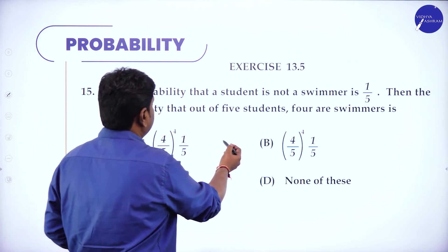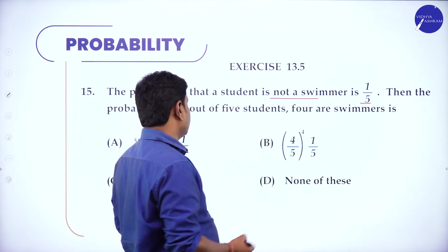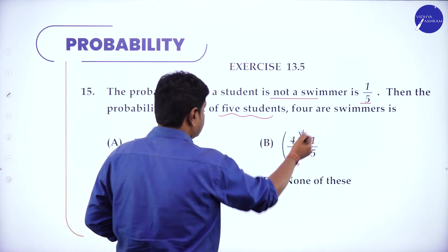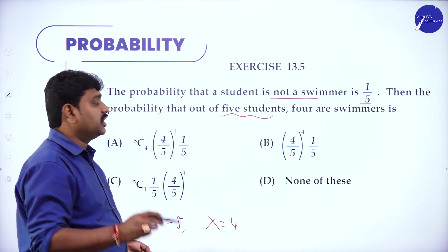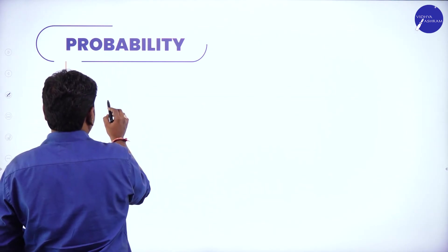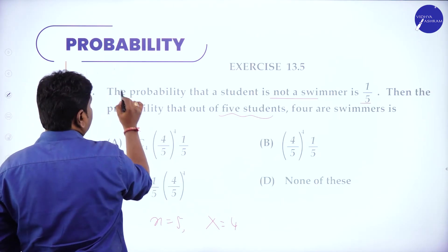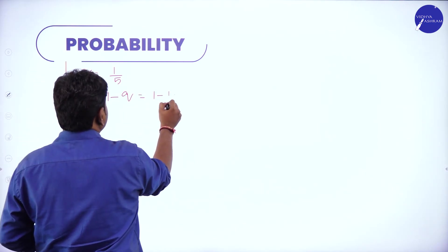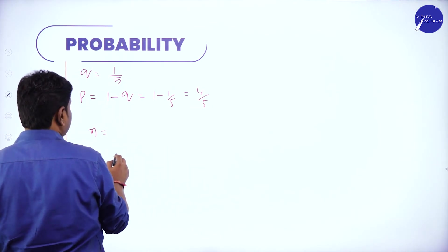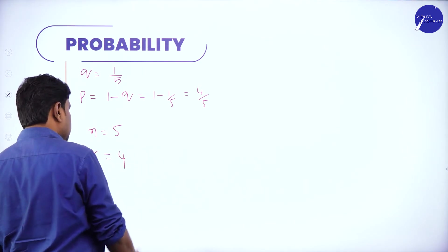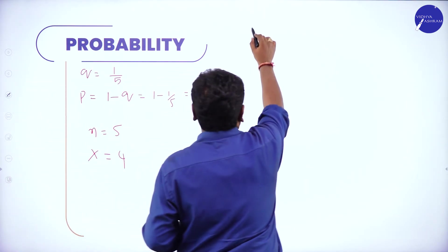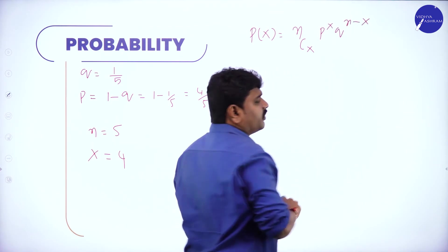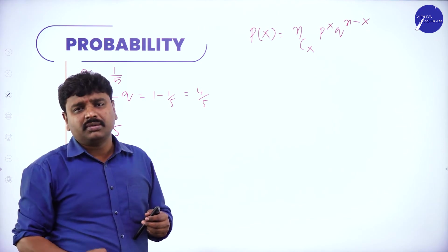Next problem: the probability that a student is not a swimmer is 1/5. Find the probability that out of 5 students, exactly 4 are swimmers. So n = 5, and since q (not a swimmer) = 1/5, then p (swimmer) = 1 − 1/5 = 4/5. This is a Bernoulli trial: 5 students are chosen independently with two outcomes each.